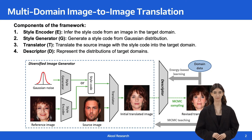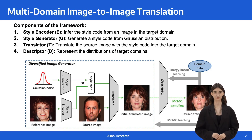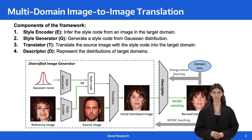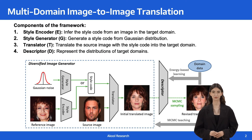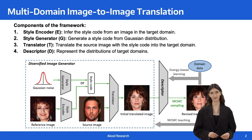The framework consists of a style generator, a style encoder, a translator, and a descriptor. The first three components — style generator, style encoder, and translator — form a diversified image generator. Given an input source image, the translator can transform it into a target domain specified by a style code. The style code can be obtained by sampling from the domain-specific style generator or extracted from a reference image by the style encoder. The descriptor is a multi-domain image distribution, which plays the role of guiding the translation such that the translated images can match the observed images in the target domain in terms of statistical property.